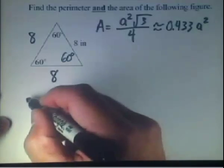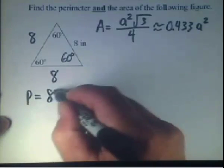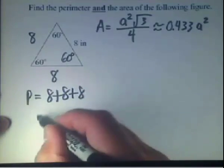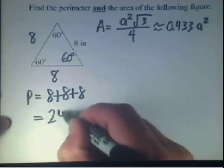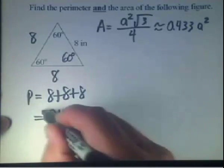So for the perimeter, we can say that it's 8 plus 8 plus 8. And so from that, we get 24 inches for our perimeter.